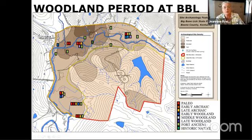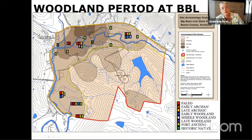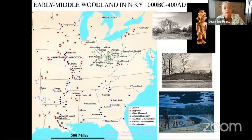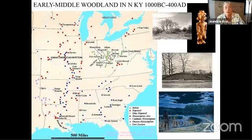Looking at a broader map, Adena are shown as triangles — that's Early Woodland. Ohio Hopewell is mixed in during the Middle Woodland time period, and sites extend up and down the Mississippi River Valley and across the southeast.